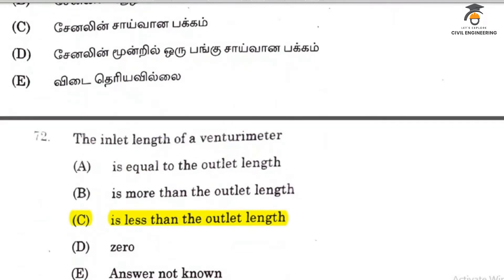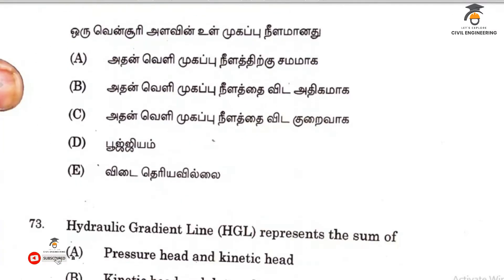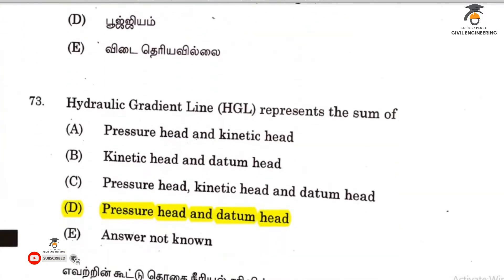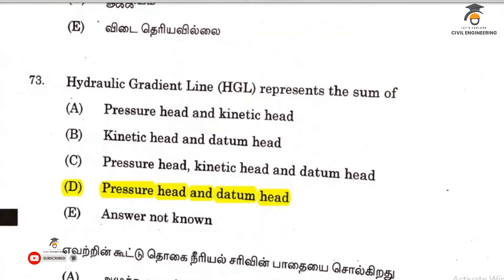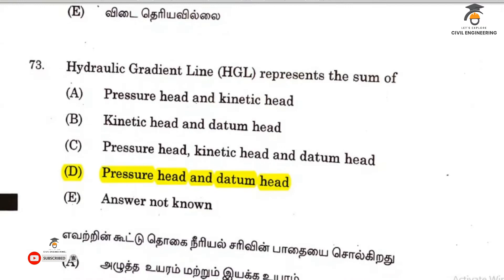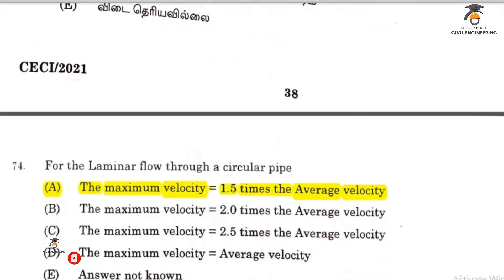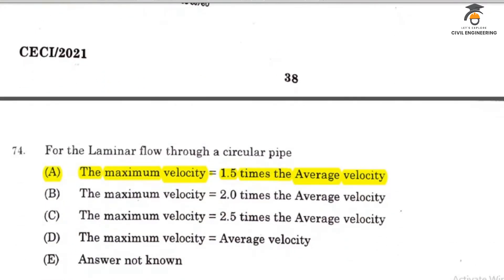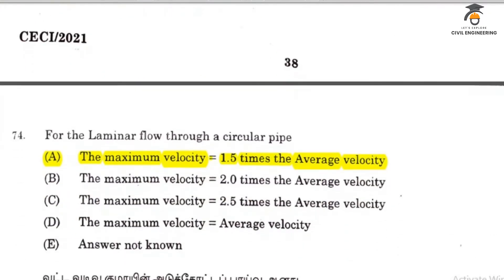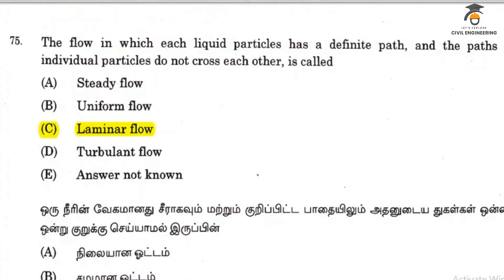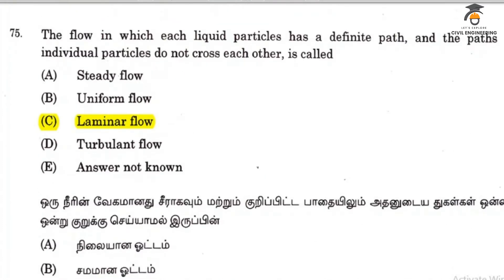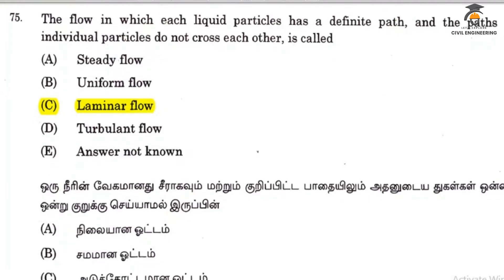The inlet length of a venturi meter is less than the outlet length. The hydraulic gradient relates pressure, rate, and elevation. In laminar flow, the maximum velocity formula gives 1.5 times the average velocity. Laminar flow is the flow in which each liquid particle has a definite path and paths of individual particles do not cross each other.